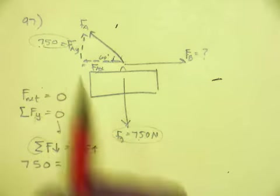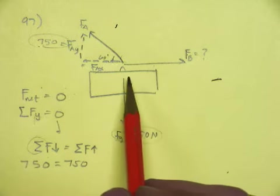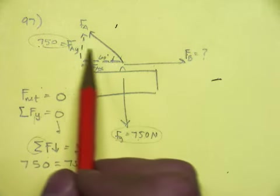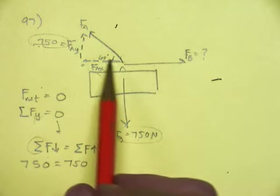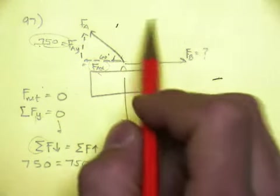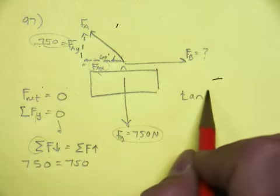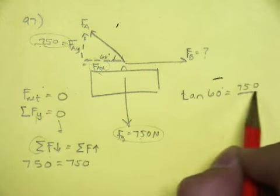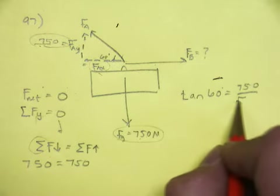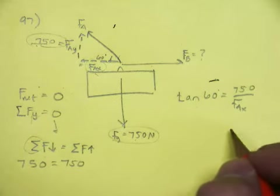Well, that's good because this cable is not lifting. It's pulling right and left. So now, here you go. Once you know this is 750, then you can find this one by using the tangent. You can say the tangent of 60 degrees is equal to the opposite, which is 750, over the adjacent, which is the force of A in the x direction.